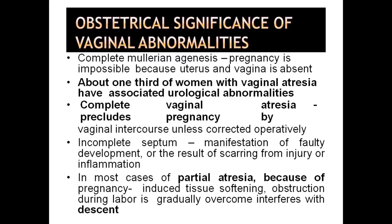Obstetrical significance of vaginal abnormalities: complete Mullerian agenesis — pregnancy is impossible because the uterus and vagina are absent. About one third of women with vaginal atresia have associated urological abnormalities. Complete vaginal atresia precludes pregnancy by vaginal intercourse unless corrected operatively. Incomplete septum is a manifestation of faulty development or the result of scarring from injury or inflammation. In most cases, partial atresia, because of pregnancy-induced tissue softening, obstruction during labor is gradually overcome, though it may interfere with fetal descent.